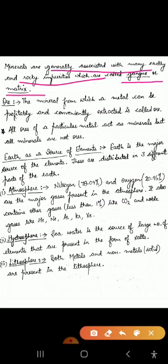Ore is that mineral from which a metal can be extracted profitably and conveniently. For example, bauxite is Al₂O₃·2H₂O — it is the ore of aluminium, and from it we extract aluminium. Zinc blende is zinc sulfide, and calamine is zinc carbonate — these are ores of zinc from which we extract zinc. So the mineral from which the metal can be profitably and conveniently extracted is called ore.